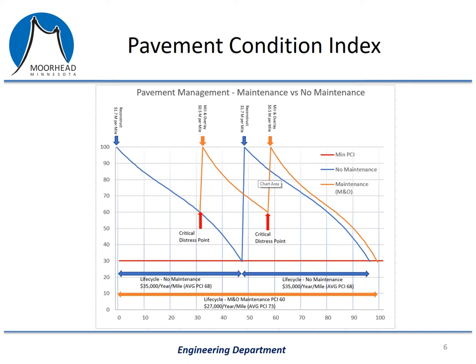The orange line represents a road that does have a mill and overlay maintenance performed on it. We would try to do a mill and overlay at those critical points, right around a PCI of 60. When we perform that work, the road is repaired and the PCI is increased back to 100. Eventually, a mill and overlay won't be effective, and we would let the road decrease down to about 30, where we would then do a reconstruction. The arrows across the bottom of the graph show that a road with mill and overlay maintenance actually extends the life of the road — meaning a longer period of time before we need to reconstruct it. Not only do we extend the life of the road, but based on the data we have from past projects, we know that we will spend less money on maintaining our roads when we do it this way, and the condition of the road will be maintained at a higher level.